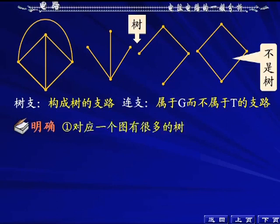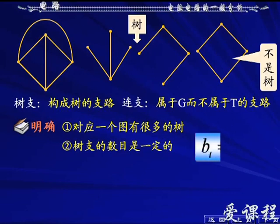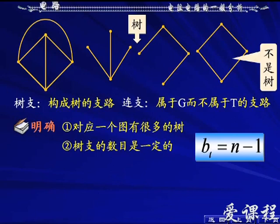连枝就是不是树枝的那些支路，连枝和树枝是对应起来的——对同一个图在选定树以后，不是树枝的支路就是连枝。连枝数加上树枝数一定等于支路数B。树枝数一定是N-1：首先要构定一个树，第一条支路要有两个节点又不能形成回路，以后每增加一条支路只增加一个节点，所以树枝数是N-1。